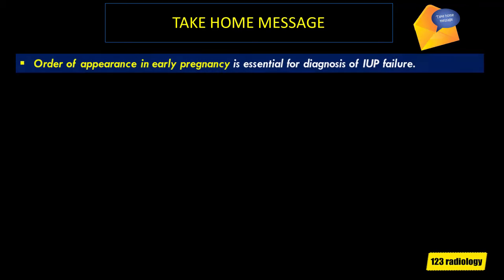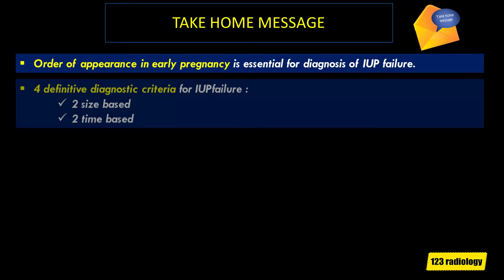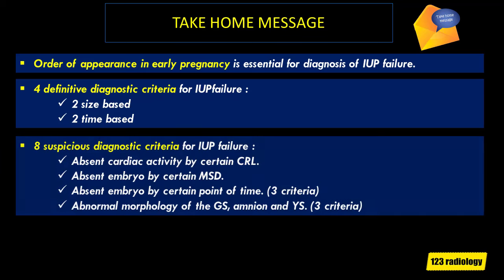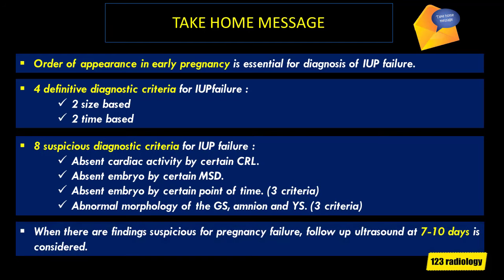The take-home message: understanding the order of appearance in early pregnancy is essential for diagnosis of intrauterine pregnancy failure. There are four definitive diagnostic criteria — two size-based and two time-based. There are eight suspicious diagnostic criteria, including absent cardiac activity by certain crown rump length, absent embryo by certain mean sac diameter, absent embryo by certain point in time, and abnormal morphology of the gestational sac, amnion, and yolk sac. When there are findings suspicious for pregnancy failure, follow-up ultrasound at 7 to 10 days is generally appropriate.